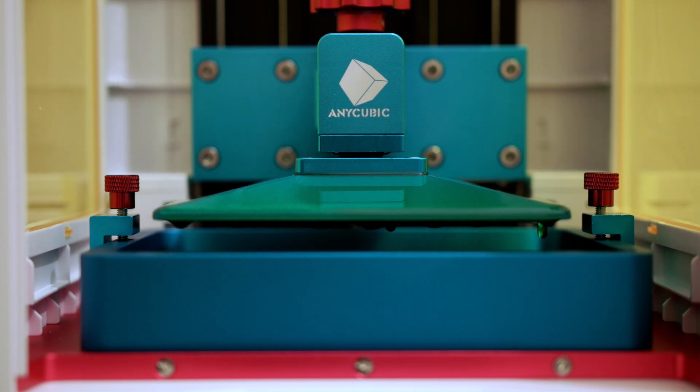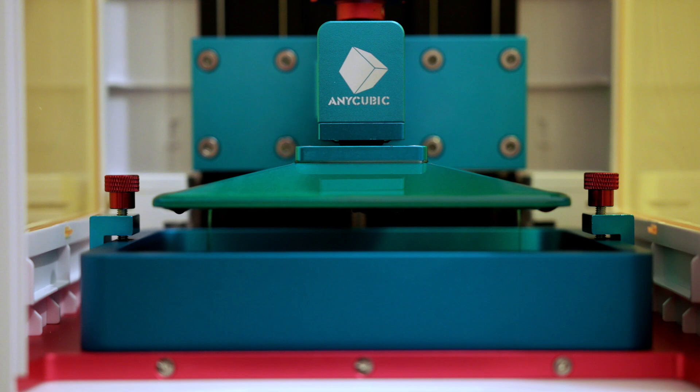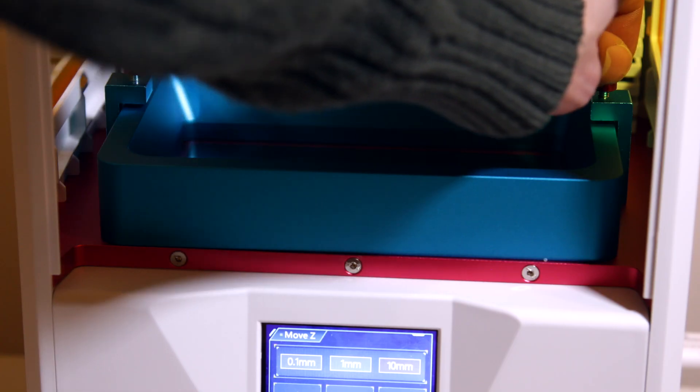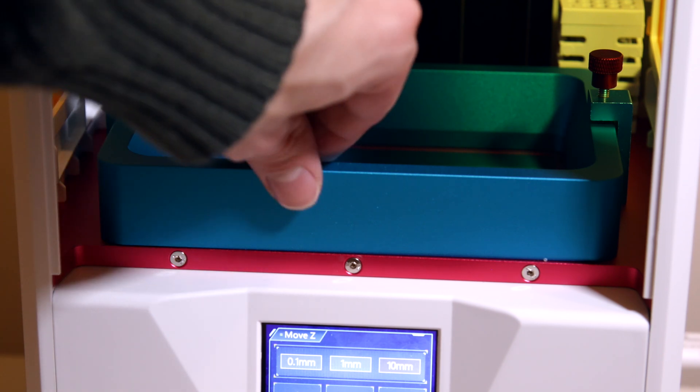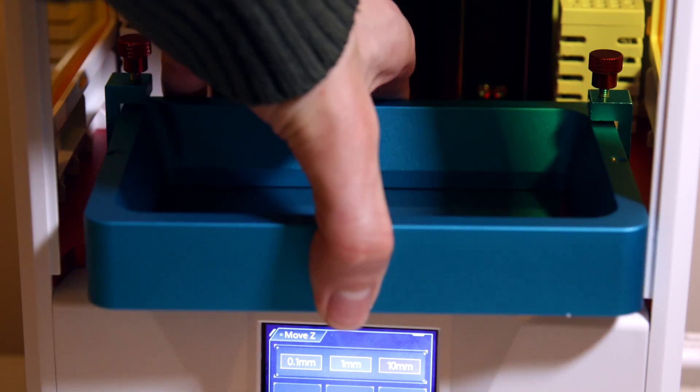SLA printers dunk the bed into a pool of resin and gradually lift up to reveal your print. This bed must be perfectly parallel to the LCD screen otherwise you will not get good results. Fortunately this is fairly easy to do.